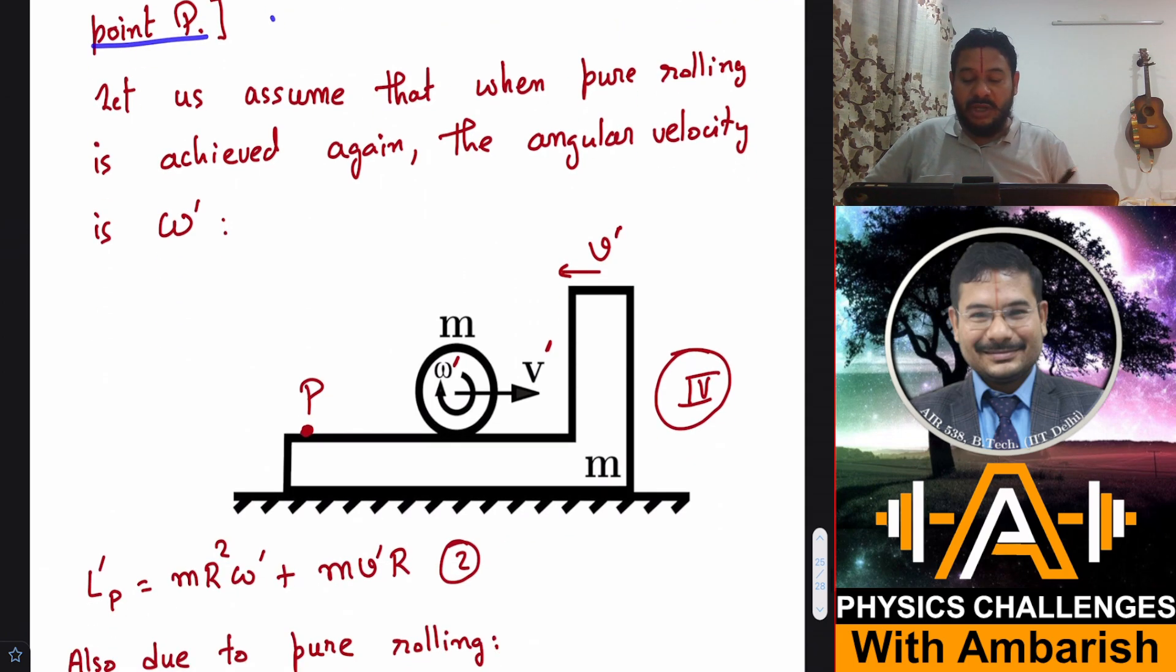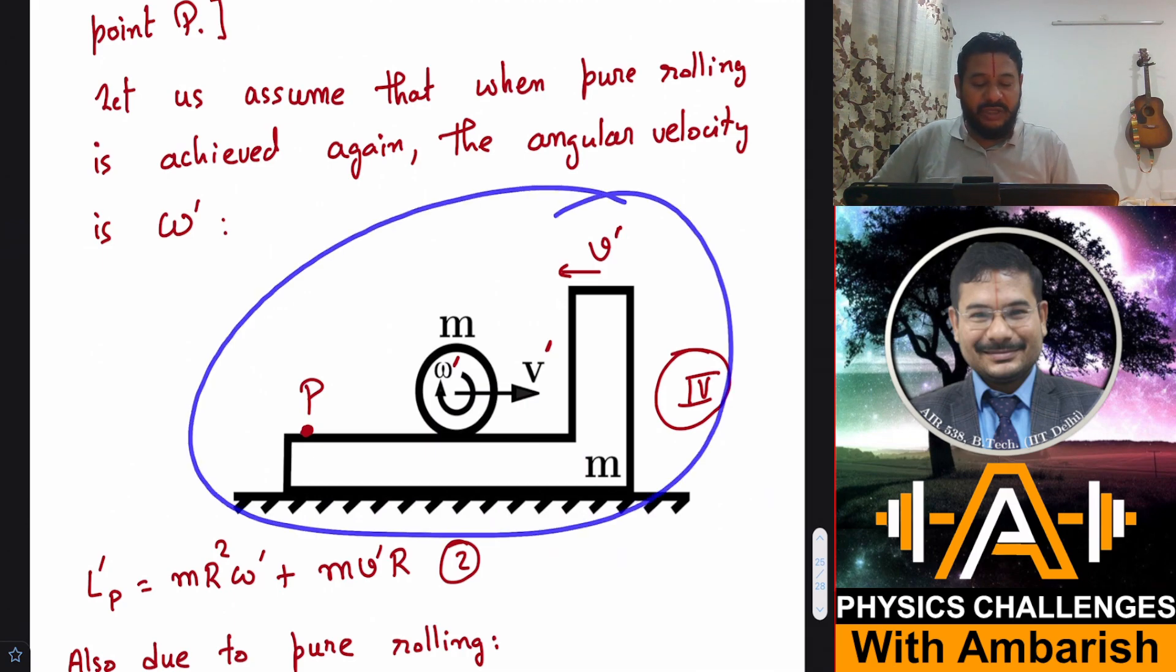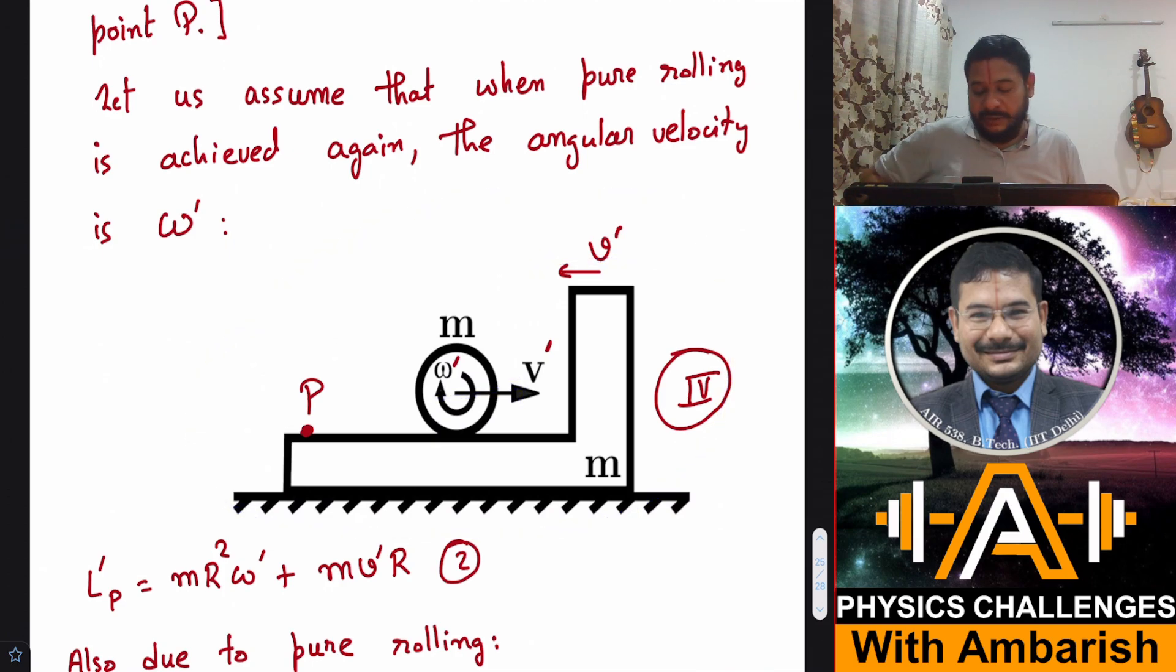So now friction starts acting on the ring. However, it passes through the axis marked P. P assumed to be fixed in CM frame, therefore we can conserve angular momentum about point P. Now let us assume that when the pure rolling is achieved again, the angular velocity is ω' in the same sense I've assumed, and the velocities I've assumed as v' and v' in the CM frame. You might be wondering why I chose v', v' like this. Could I have assumed them in the opposite direction? It doesn't matter. On solving, if you get negative that automatically means the direction opposite to the direction that you've assumed.